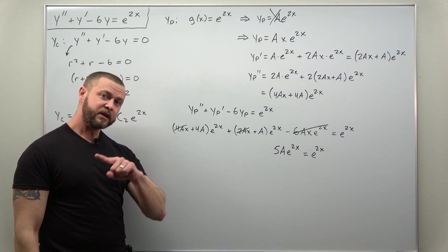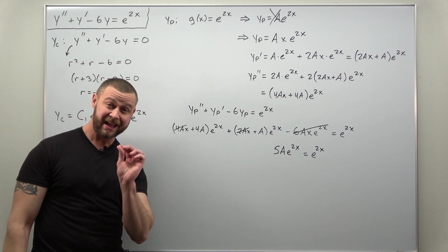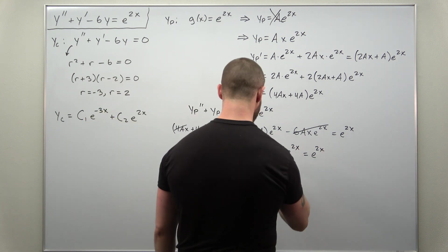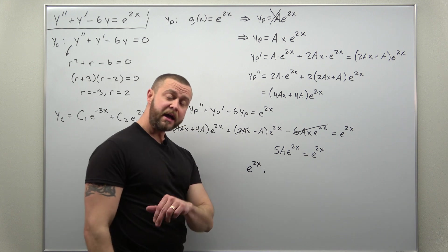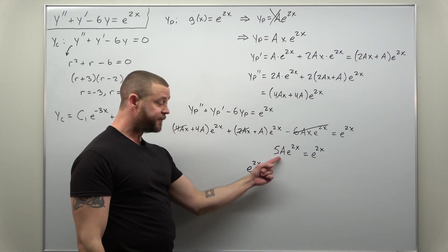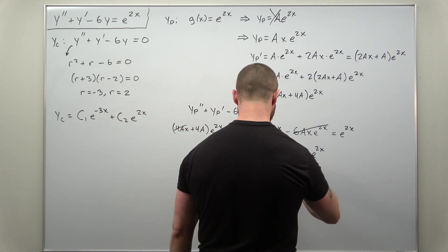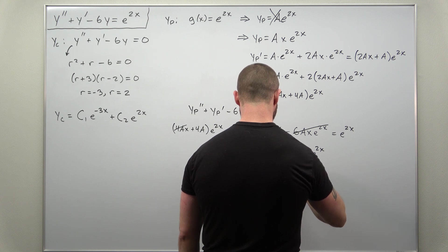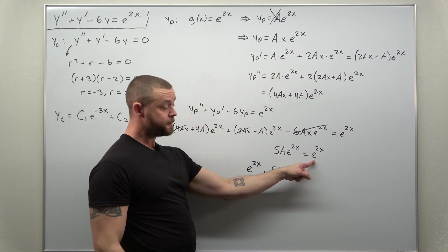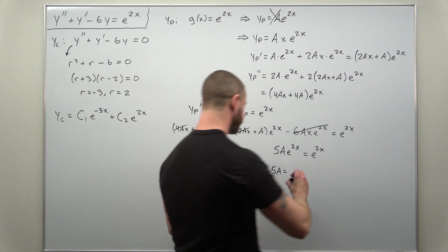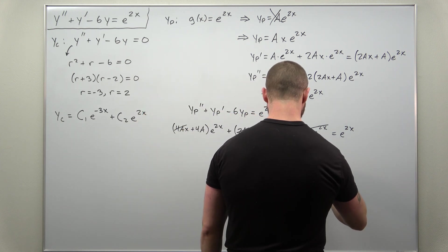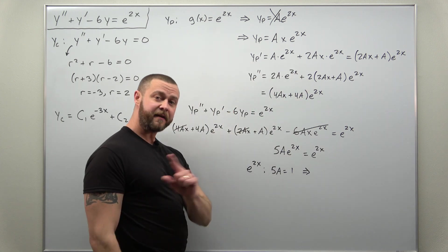Now, what we're equating on both sides are coefficients of the exponential term e^(2x). And on the left side, your coefficient is 5A. And your coefficient of the exponential on the right side is 1. And we can solve that very easily.